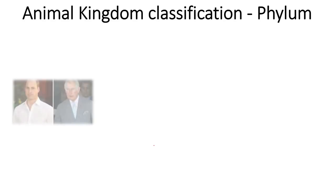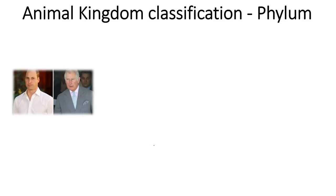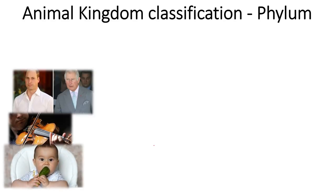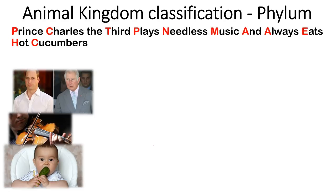Let's begin with the mnemonic sentence we've formed here. We're thinking of Prince Charles and his obsession with playing music and eating cucumbers. The sentence is: 'Prince Charles the Third plays needless music and always eats hot cucumbers.' It's a bit weird to remember, but that's exactly what we want — weird stuff helps us remember fast.